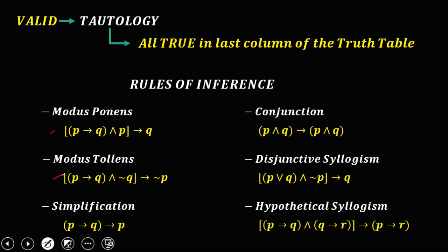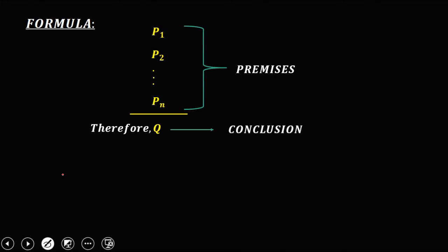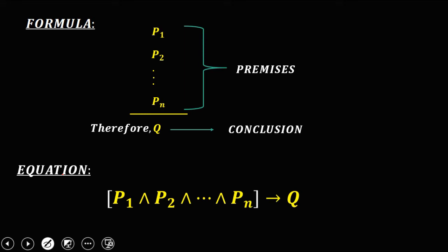If the equation of an argument is found in the rules of inference, then that argument is valid. When constructing an equation for a given argument, we use this formula: P₁, P₂, ... Pₙ, then the conclusion Q. These are the premises, and Q is the conclusion. To make an equation, we put a conjunction after every premise, and for the conclusion, that's an implication — implies Q.